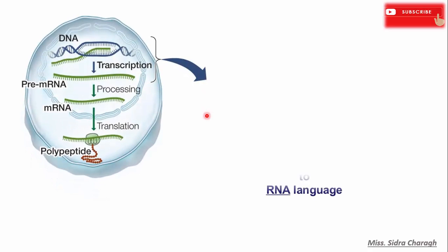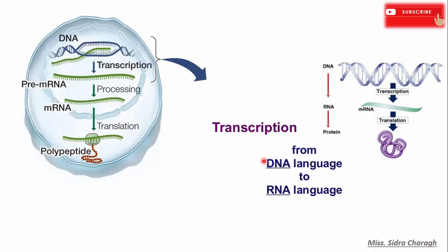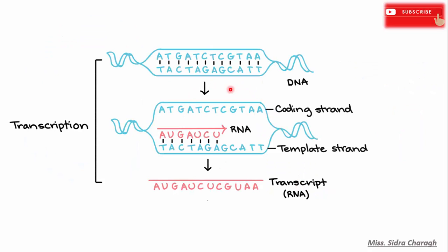Today we will discuss transcription. Transcription is the process in which an RNA copy of the DNA sequence encoding a gene is produced with the help of an enzyme called RNA polymerase. Only one of the two strands of the DNA is transcribed; this strand is called the template strand or the anti-sense strand, and the opposite strand is called the coding strand or the sense strand.